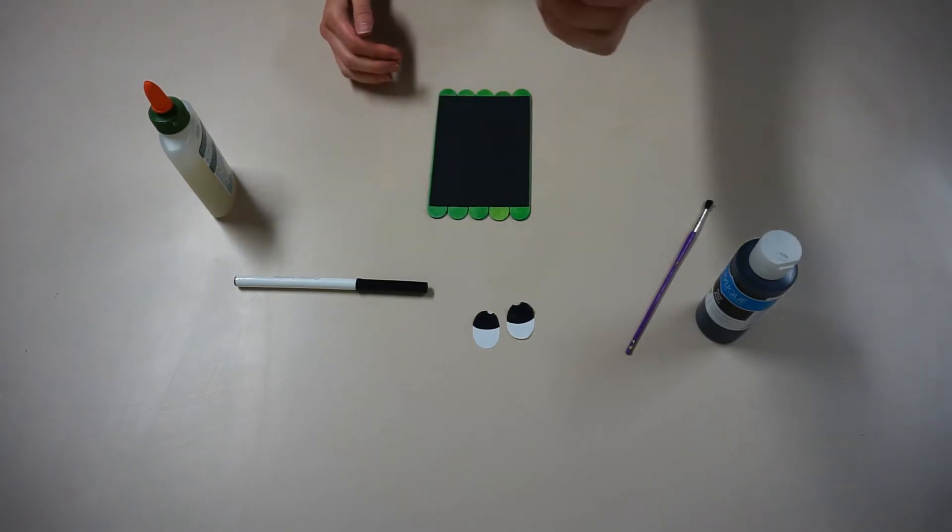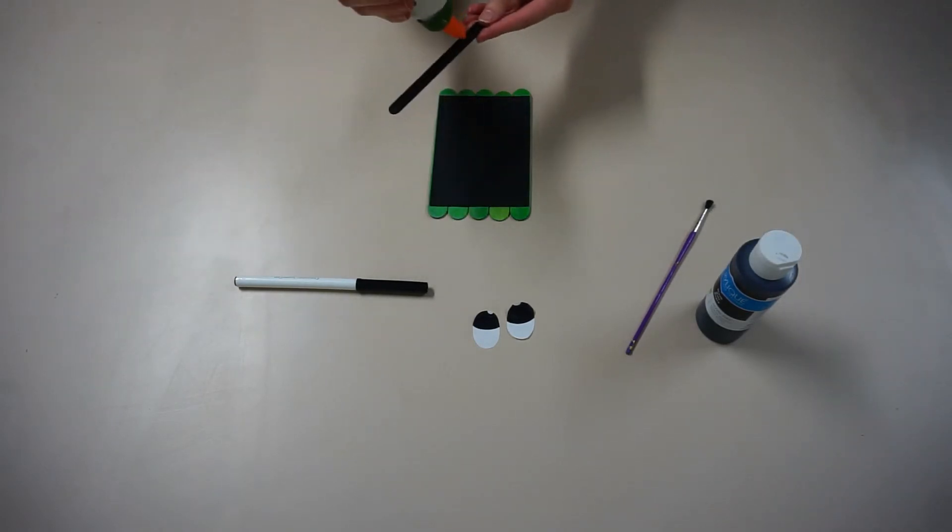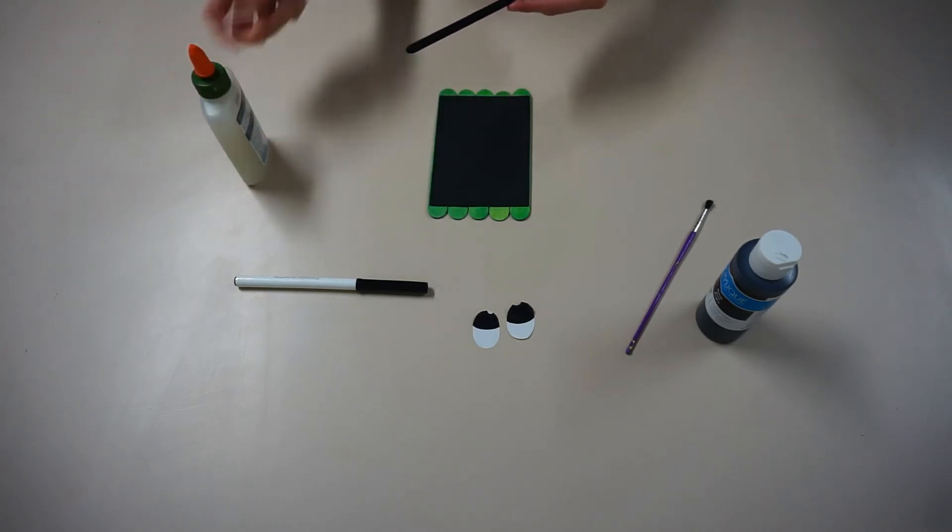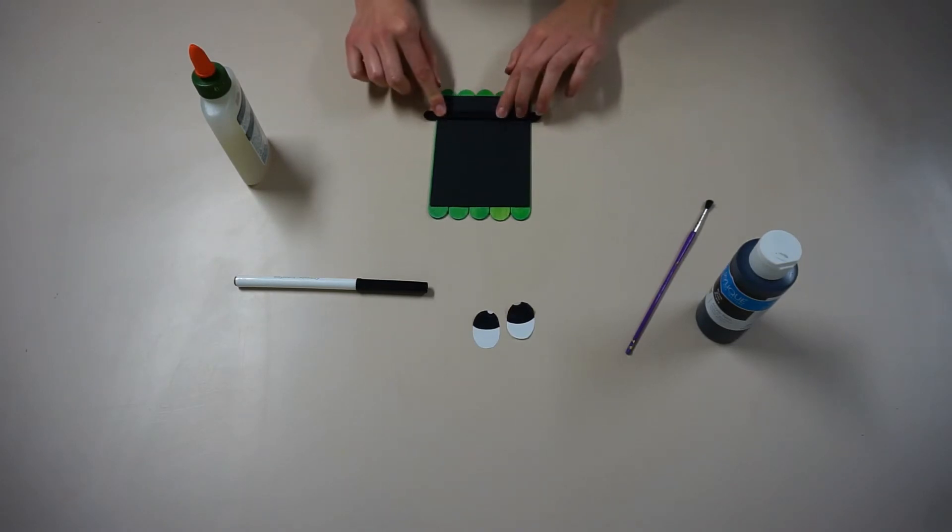Next take your single black popsicle stick and put a little bit of glue right down the middle. This you'll put down flat against the black cardboard and will be Frankenstein monster's bolts.